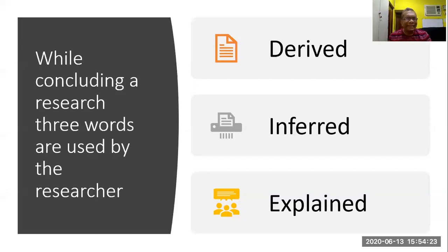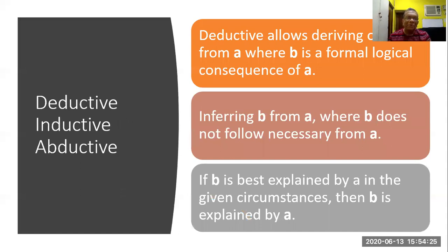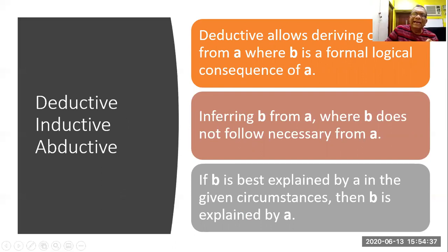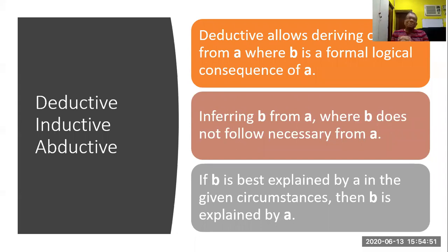Let me come to deductive, inductive, and abductive logic we use in our research. Deductive logic allows deriving B from A, where B is a formal logical consequence of A. For example, all men are mortal; K. Prabhakar is a man; therefore he is also mortal. This is deductive.